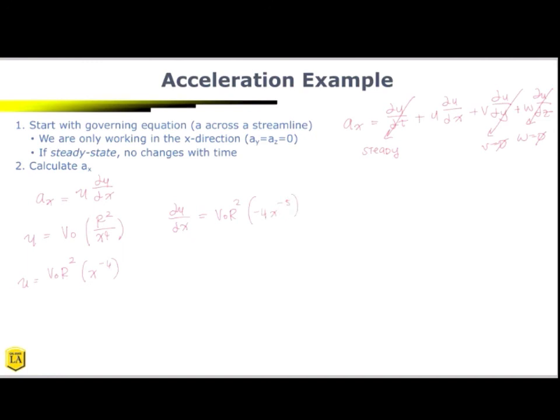So now what we're going to do is we're going to put these together to calculate our acceleration field in the x direction. So ax is u v_0 r squared, let's go ahead and put that back in denominator, x to the fourth power multiplied by du/dx, which is negative 4 v_0 r squared over x to the fifth power. So that means that our acceleration in the x direction is going to be negative 4 v_0 squared r to the fourth power over x to the ninth power.